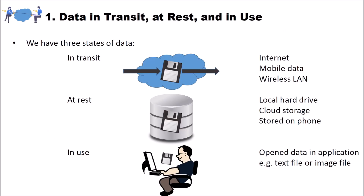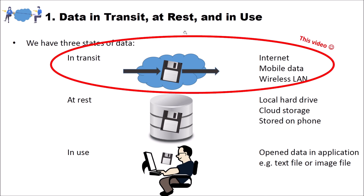When we speak of data, we define three different states. The first state of data is data in transit. This cloud here is the internet, and you send some data through the internet — that means we have data in transit. Examples for data in transit are the internet, mobile data, or wireless data. In this video, we will discuss how to achieve security for data in transit with two different techniques: transport layer encryption and end-to-end encryption.